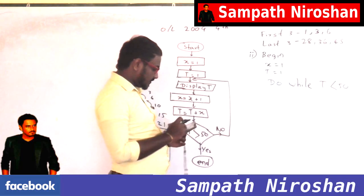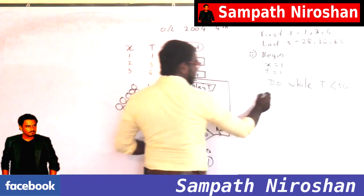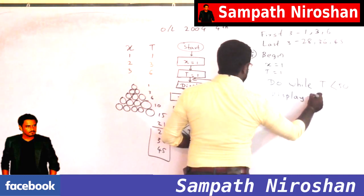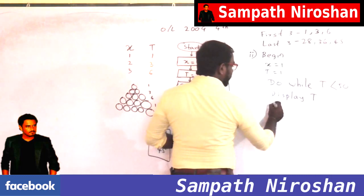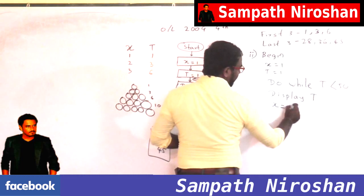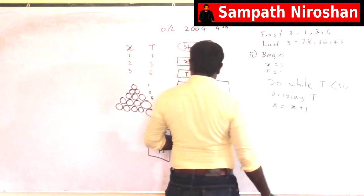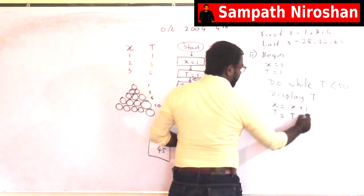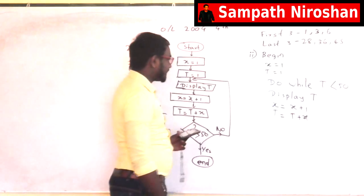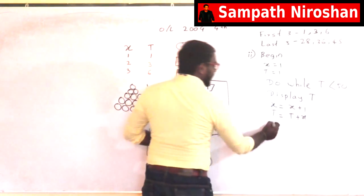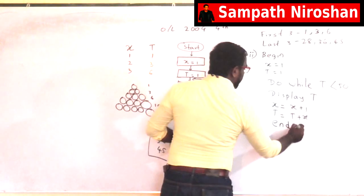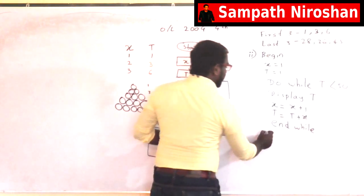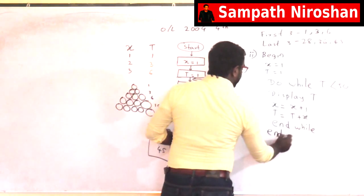What to do? What are the things I need to do? First thing to do is displaying t. So display t. And next I am going to update x as x equals x plus 1. Next I am going to update t as t equals t plus x. And that's it. So I have to end the loop saying end while. And I need to end the code by end.